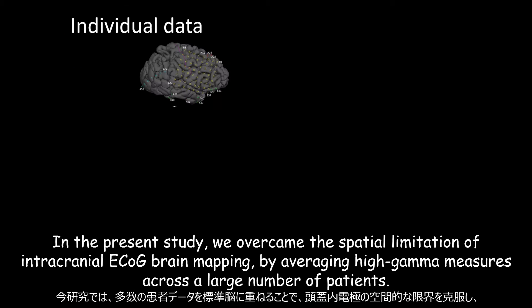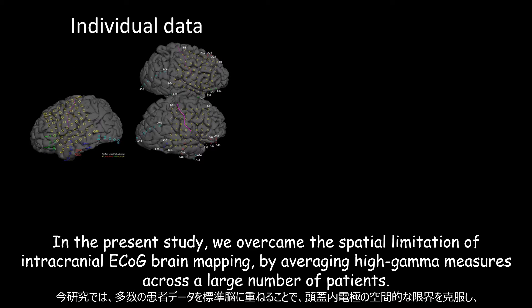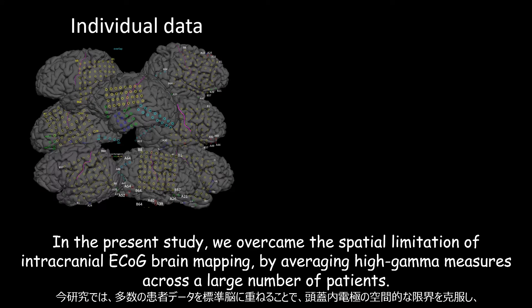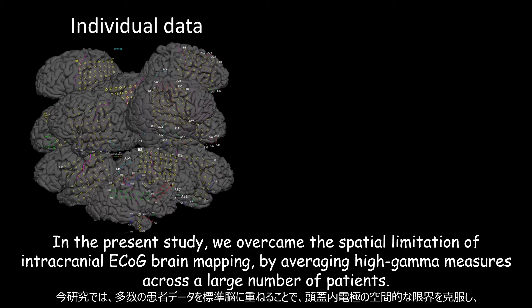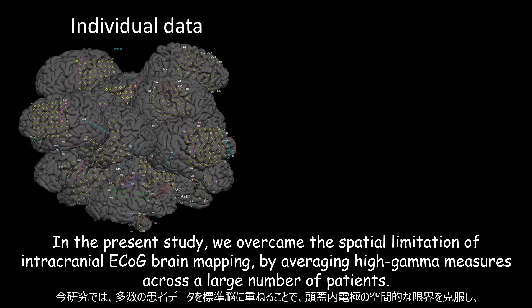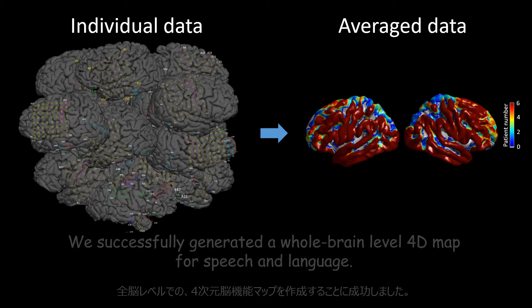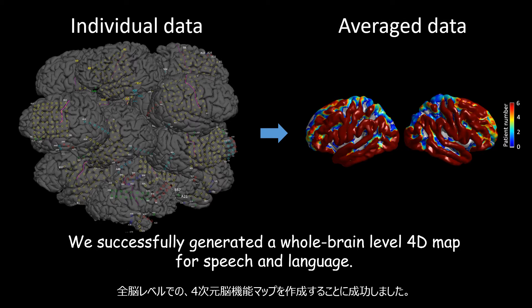In the present study, we overcame the spatial limitation of intracranial ECoG brain mapping by averaging high gamma measures across a large number of patients. We successfully generated a whole brain level 4D map for speech and language.